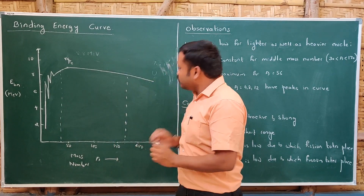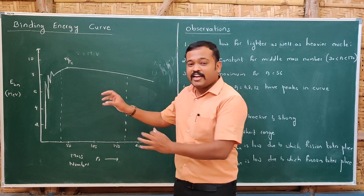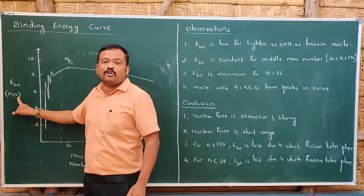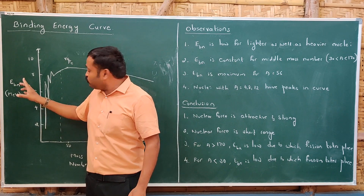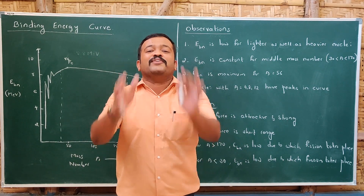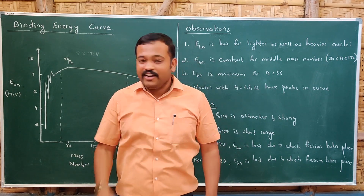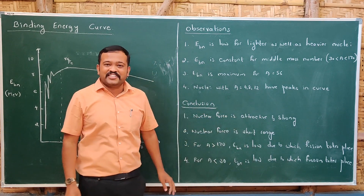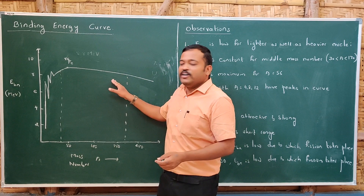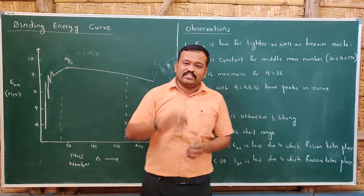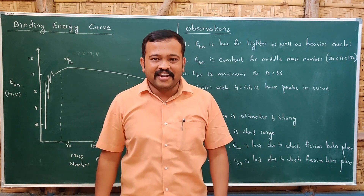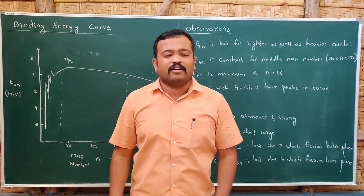The conclusions from this binding energy curve: since specific binding energy values are in the order of mega electron volts, this tells us that the nuclear force between nucleons is attractive as well as strong. Also, since specific binding energy is constant for middle mass numbers, we can conclude that nuclear force is a short-range force.